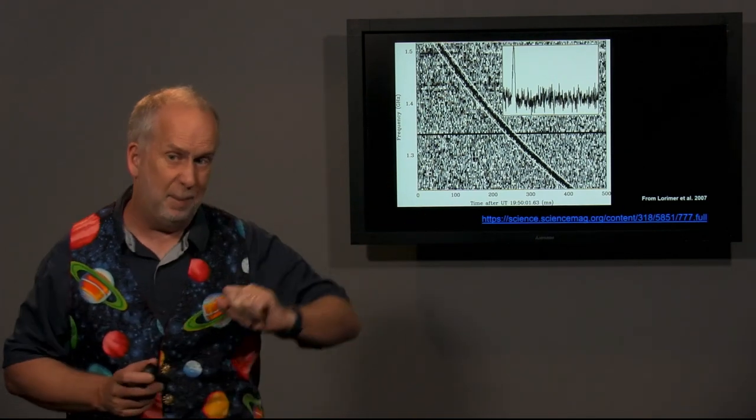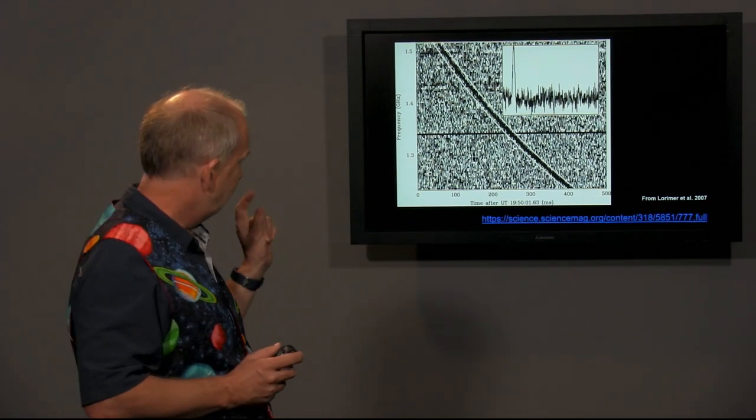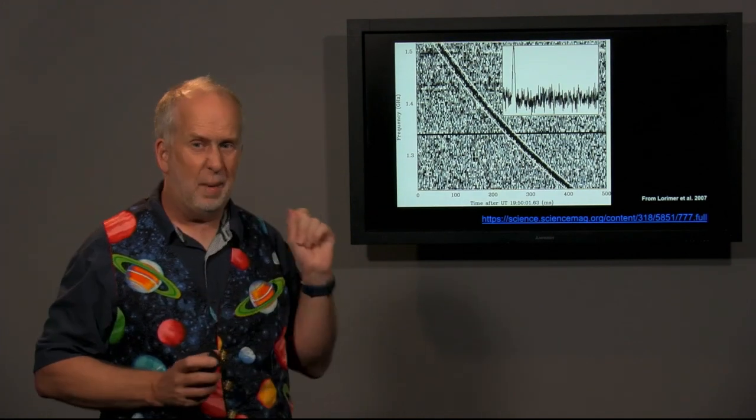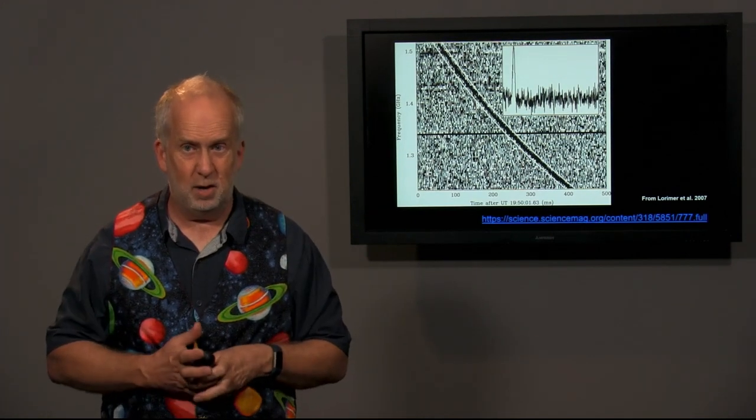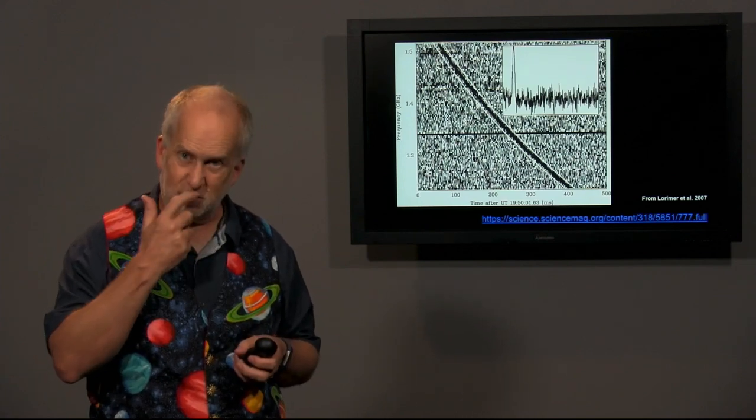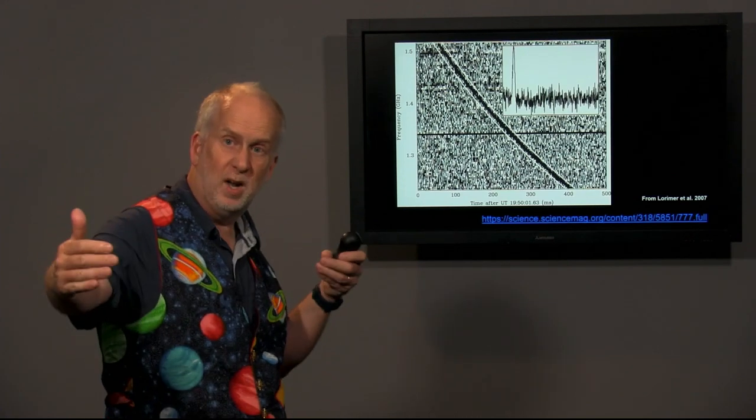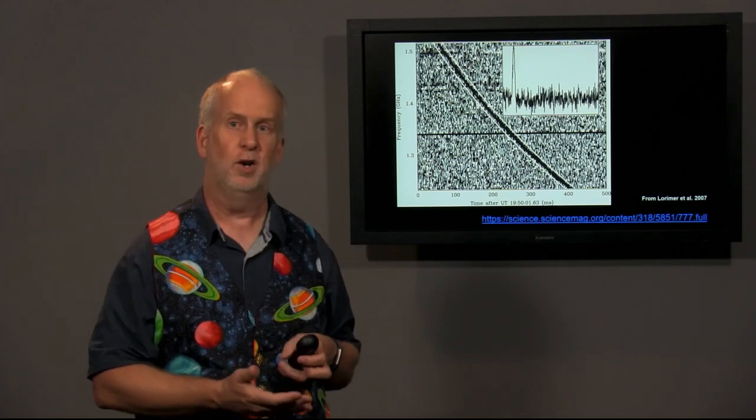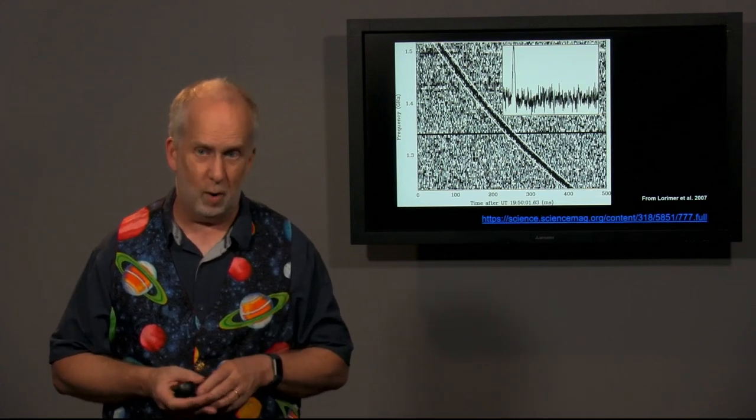So when they saw this they thought this is going to be real. I mean it's very hard to get interference that produces that particular pattern. And it has to be from outside our own galaxy. In our own galaxy you do get the dispersion but it's much smaller than this. To get enough dispersion, enough plasma between us and the source to get this big slope, it would have to be a very long way away.